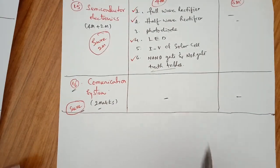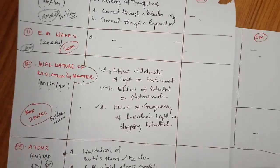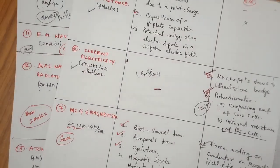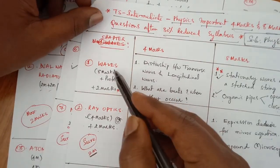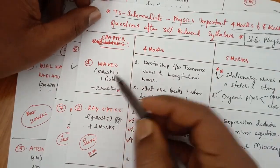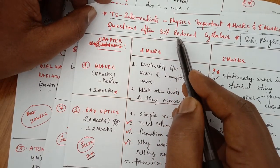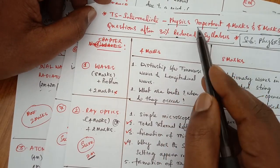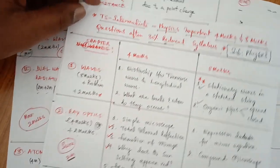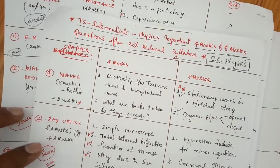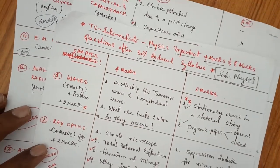This covers the important 4 marks and 8 marks questions chapter-wise after 30% syllabus reduction, for MPC and BIPC subject physics. Thank you so much. Please subscribe to my channel for more updates.